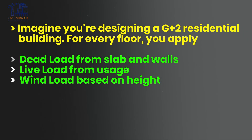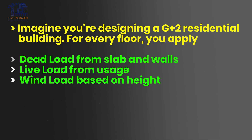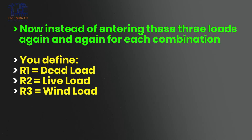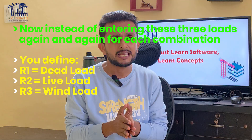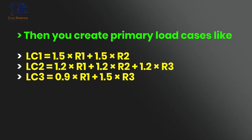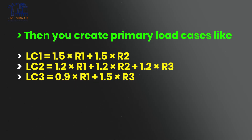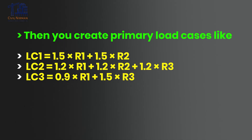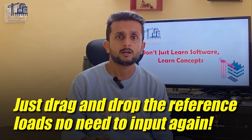Let me give you a simple example. Imagine you are designing a G+2 residential building. For every floor you apply dead load from slabs and walls, live load from occupancy, and wind load based on height. Instead of entering these three loads again and again for each load combination, you define reference load cases: R1 for dead load, R2 for live load, and R3 for wind load. Then you create primary load cases — Load Case 1: 1.5×R1 + 1.5×R2; Load Case 2: 1.2×R1 + 1.2×R2 + 1.2×R3; Load Case 3: 0.9×R1 + 1.5×R3. Just drag and drop the reference loads — no need to input them again.